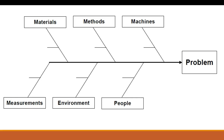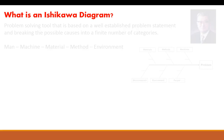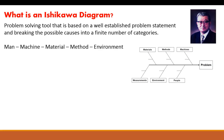Once you've used it, what exactly do you do with the information? An Ishikawa diagram is a tool that came about during the 1960s, so a relatively recent tool. It was developed by an engineer named Ishikawa. It's a problem-solving tool based on a well-established problem statement — you have to establish the problem statement first — and breaking that problem into possible causes with a finite number of categories. Hence the name cause and effect diagram.